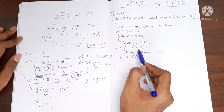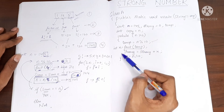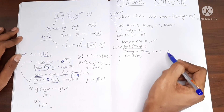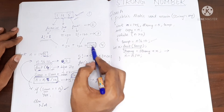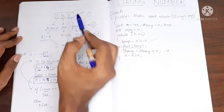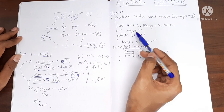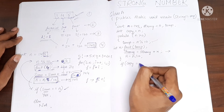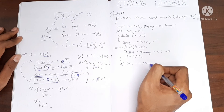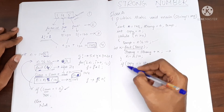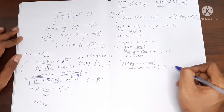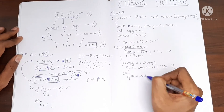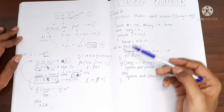After the while loop finishes, strong holds the total sum of factorials. We then check: if copy equals strong, we print that it is a strong number; else we print that it is not a strong number. That is where the main function ends.